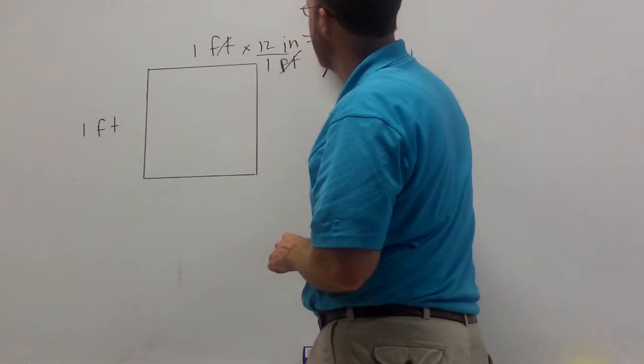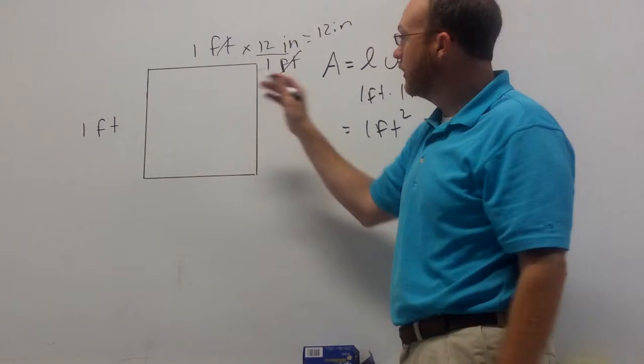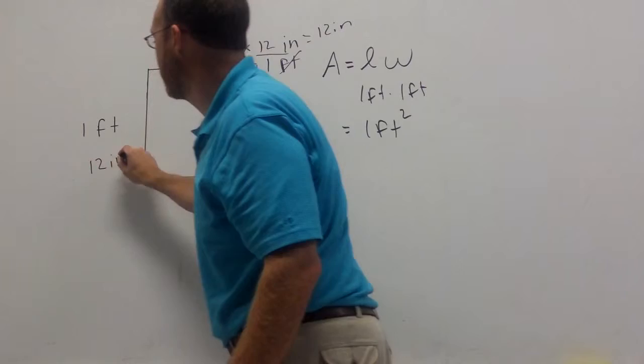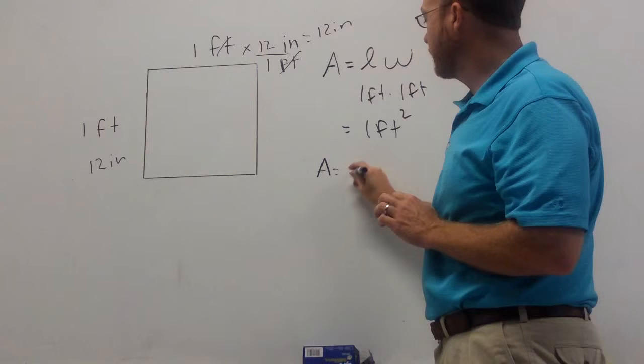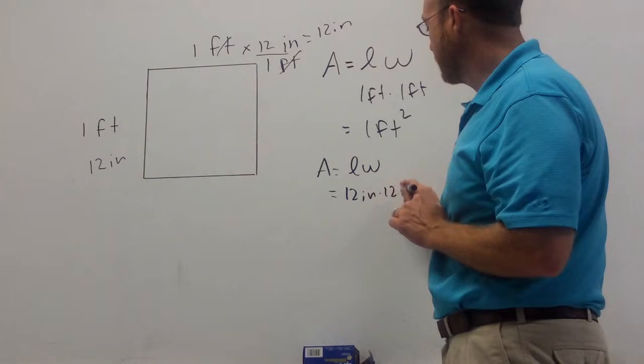Now I can do the same thing over here. I'm a little bit lazy. Don't go ahead and say this is 12 inches. So notice, I really had to convert twice. I converted this foot to inches, and I converted this foot to inches. So if I wanted to find the area now in square inches, I could say the length times the width is 12 inches times 12 inches, which is 144 square inches.